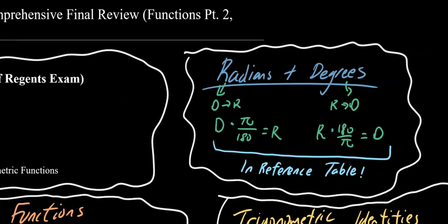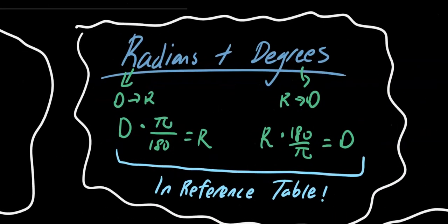First, let's start off by identifying the way that we measure angles: radians and degrees. These equations are both in your reference table, so you don't need to memorize them, but to go from degrees to radians simply multiply by pi over 180, and to go from radians to degrees, multiply by 180 over pi.